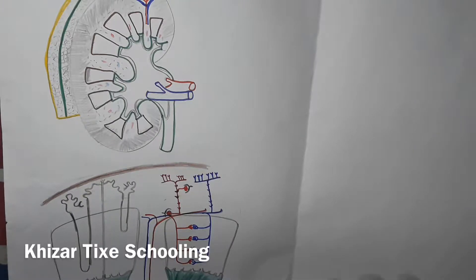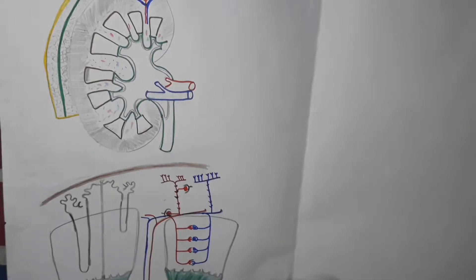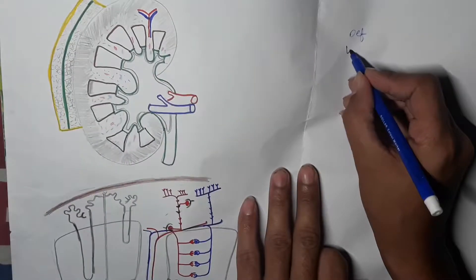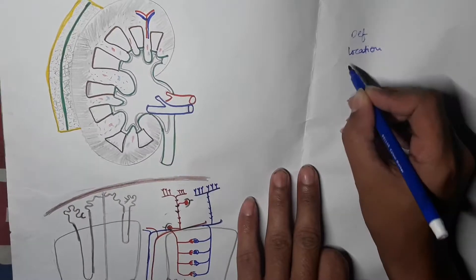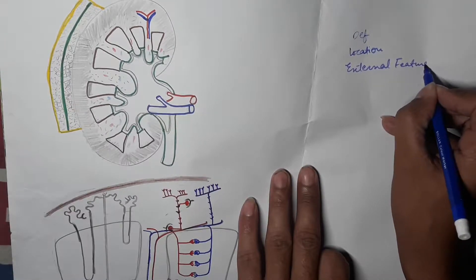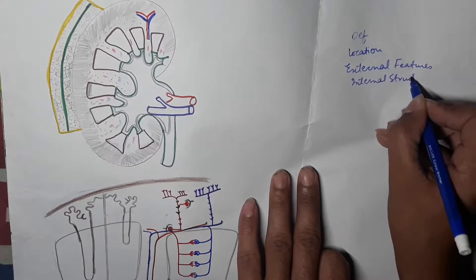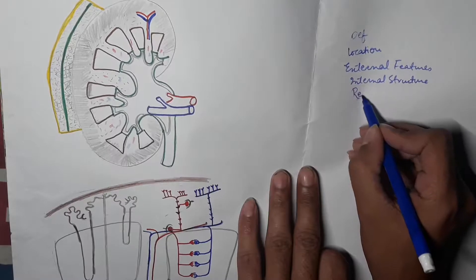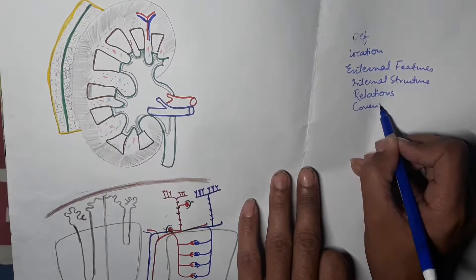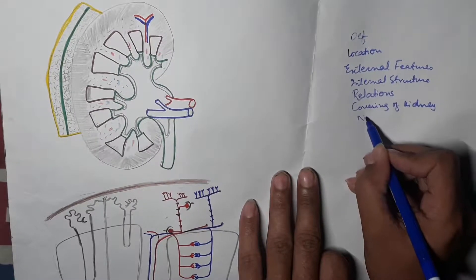Hello, it's Kesar from Tag Schooling. In this session we learn about the kidney. We will cover kidney under seven different headings: definition, location, external features, internal structure, relations of the kidney with different organs and vessels, coverings of the kidney, and finally neurovasculature of the kidney.